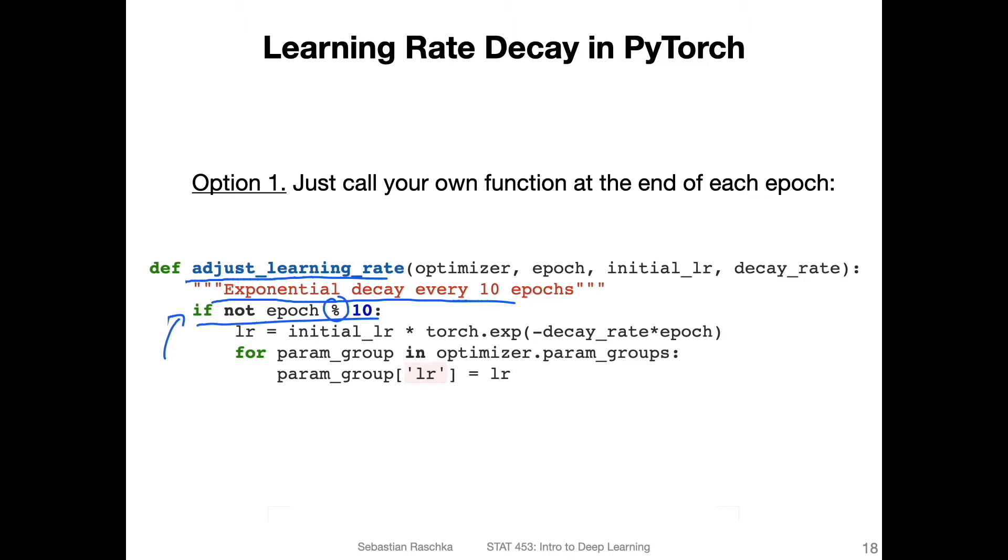So this line may read a little bit counter-intuitively, because this modulus operator is essentially doing a division and then returning the remainder of that division. So if I have a number that is not divisible by 10, it will return the remainder. And here it's essentially saying if there's no remainder, then do this. So it's essentially doing something every 10 epochs.